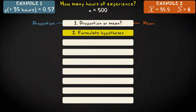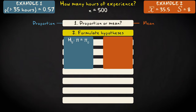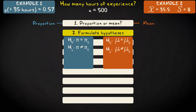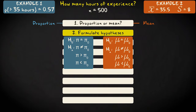Step 2: Formulate your hypotheses. In the case of a proportion, your null hypothesis looks like this: pi equals pi-zero. In the case of a mean, it is mu equals mu-zero. We can have three types of alternative hypotheses: pi or mu does not equal pi or mu-zero (two-sided test); pi or mu is larger than pi or mu-zero (one-sided right-tail test); or pi or mu is smaller than pi or mu-zero (one-sided left-tail test).